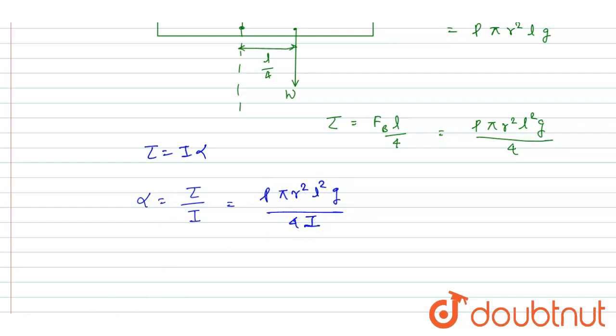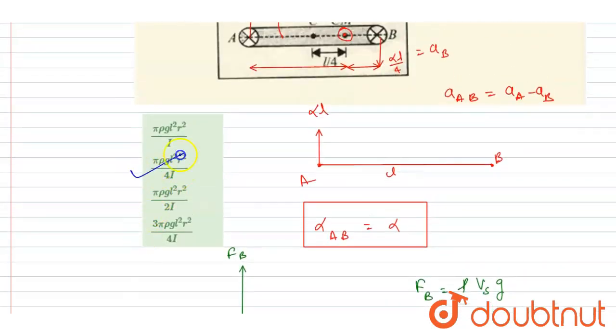And as I told you, the angular acceleration of A with respect to point B will be the same as the angular acceleration of the system about the center of mass, which is this. Now you can check the options. Yes, option B is the correct one. Thank you.